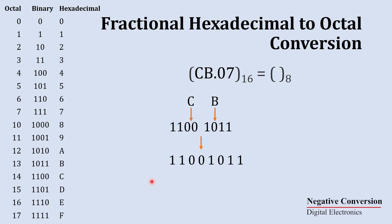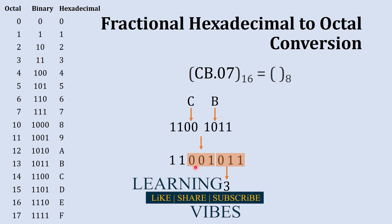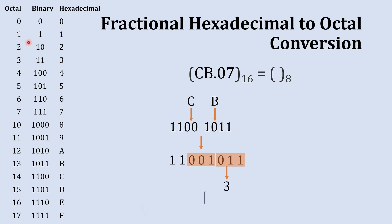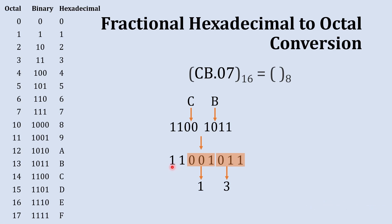To convert binary back into octal, we create sets of three binary digits, since each three-bit group represents one octal digit. Starting from the right: 011 is 3, the next set 001 is 1, and the remaining two digits get a leading zero added on the left — 011 is 3. So the octal equivalent of the whole number part is 313.